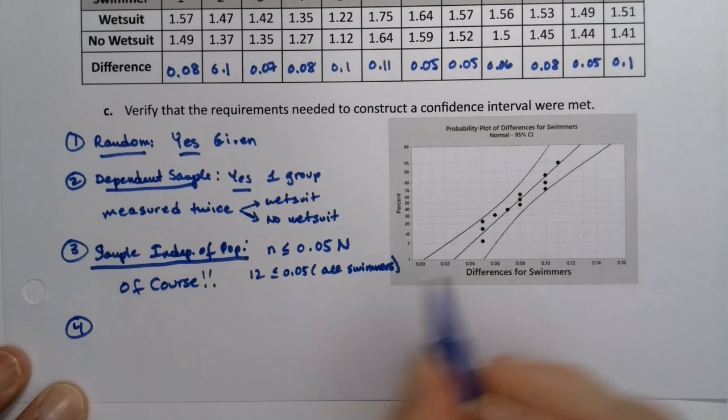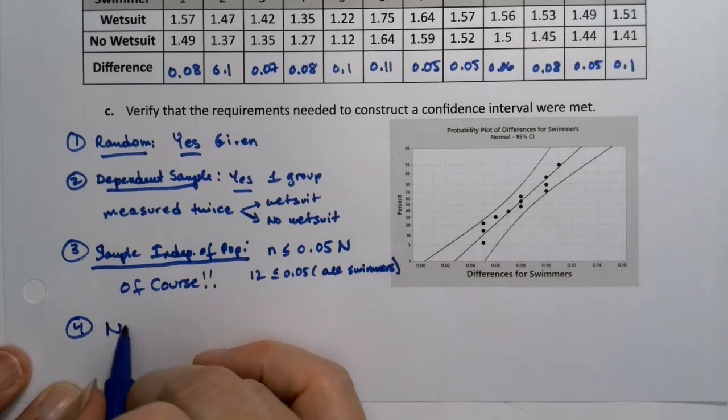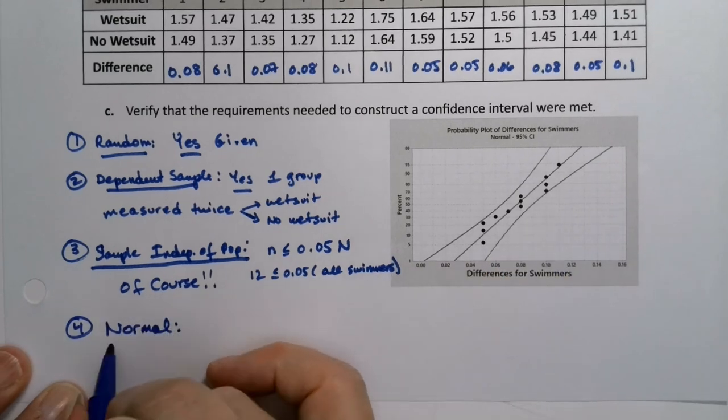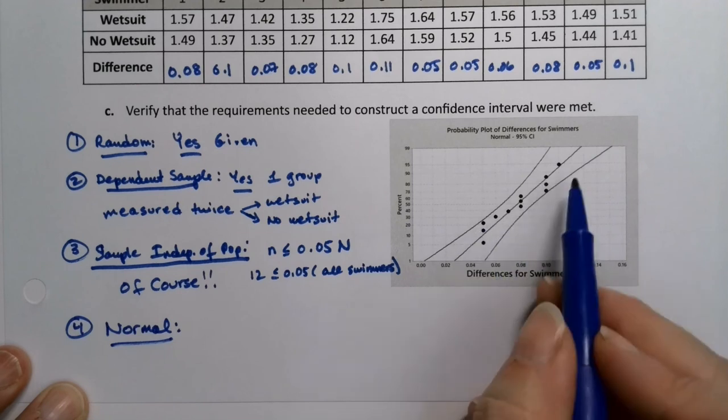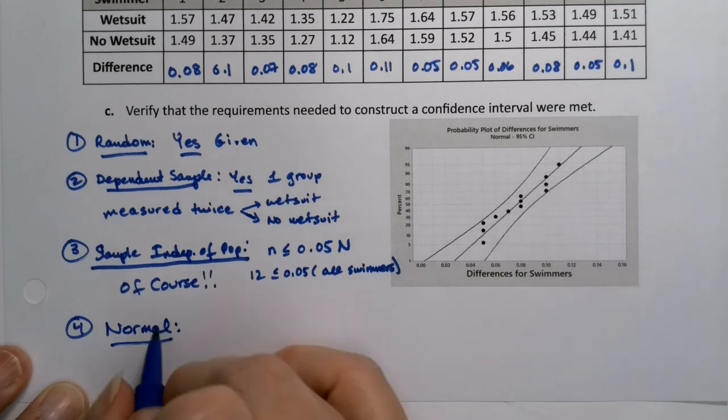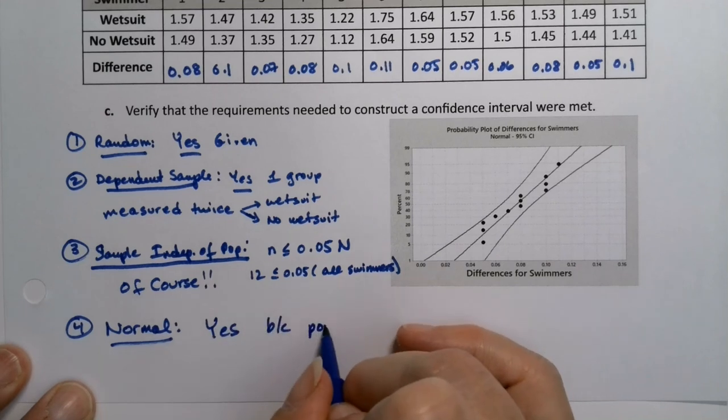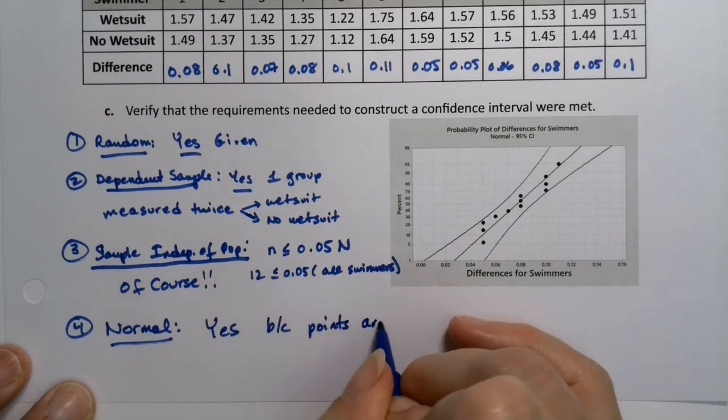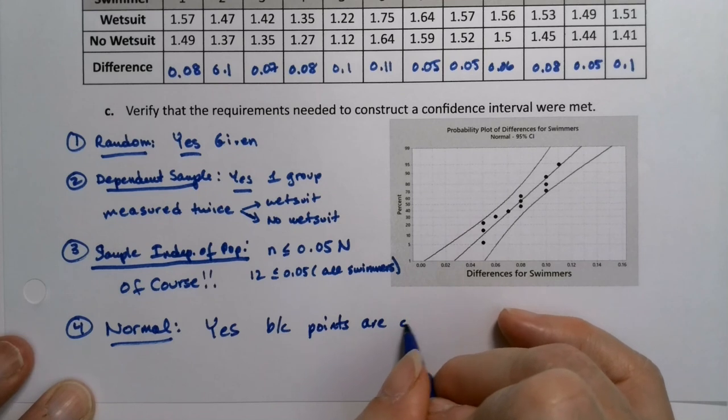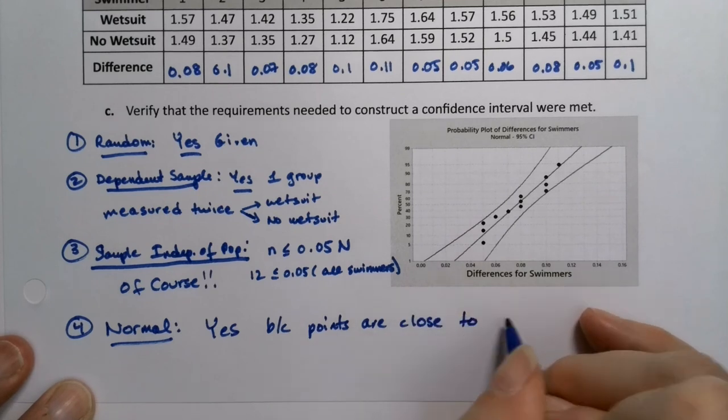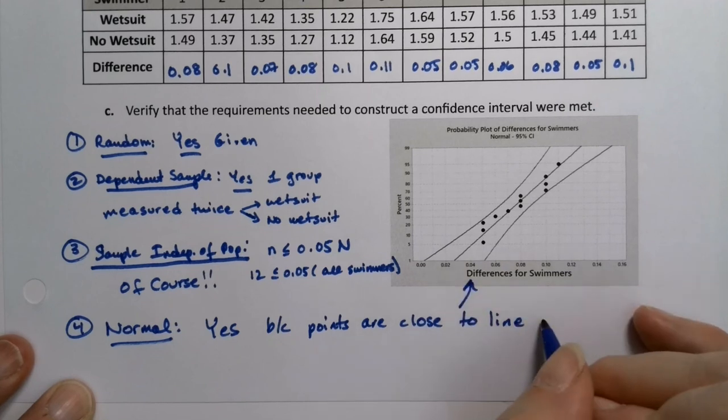And then the last piece, which is over here is normal. And it's a close thing right there with that little dot, but it's close enough, right? So we're okay. It is normal. So this is yes, because the points are close to the line. They're linear-ish in the normal probability graph.